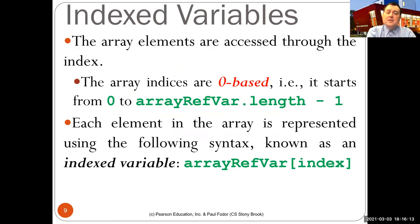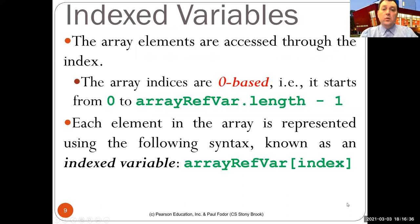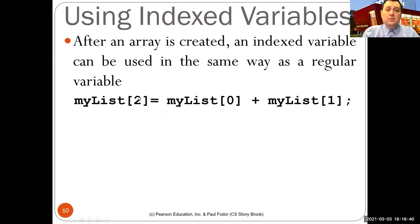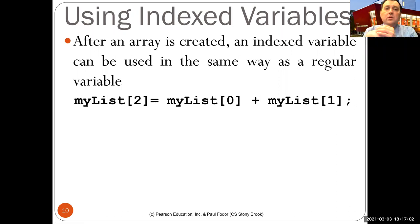Array elements can be accessed through an index variable. Indices start at zero and range up to length minus one. Each element is represented using the syntax: array reference variable, open bracket, index, close bracket. You can assign any value to myList[2], or even assign myList[2] = myList[0] + myList[1], which takes the values of the first two elements and assigns their sum to the third. From this point on those indexed variables work just like regular variables — you can read from or write to them.